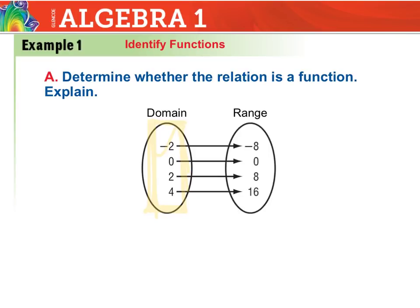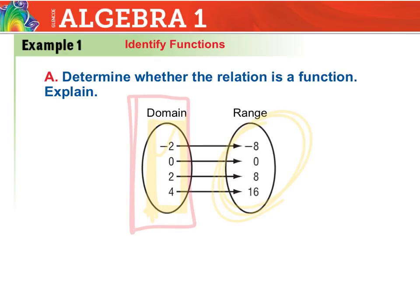I've got negative 2, 0, 2, and 4. If none of those numbers are the same, then it makes no difference what values they go to over in our range — it has to be a function. In this case they all go to different y values, but all four of these could all go to the same range value, negative 8, and we'd still have a function. So when determining from a table or a map, just focus in on the domain values. This relation is absolutely a function.